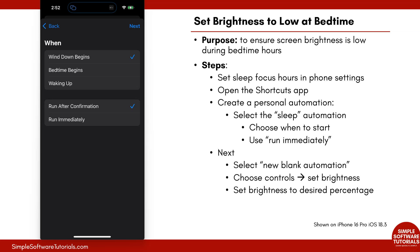It's having us select when we want this to start. I just want it to start when bedtime begins. Down at the bottom, choose Run Immediately — I don't need to confirm anything. I also don't need to be notified when it runs, but if you want that, just tap the toggle on and it'll show you a notification. I'm turning that off.